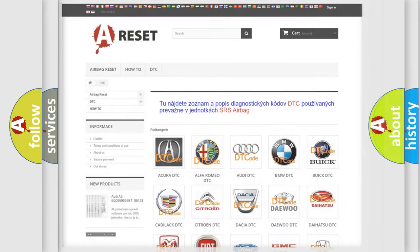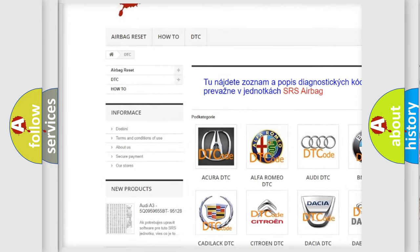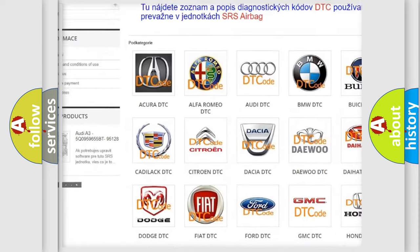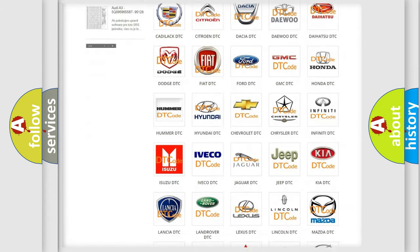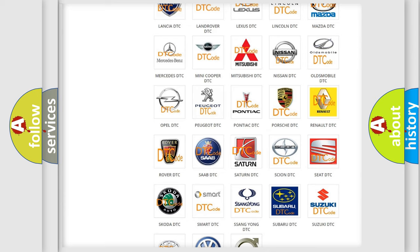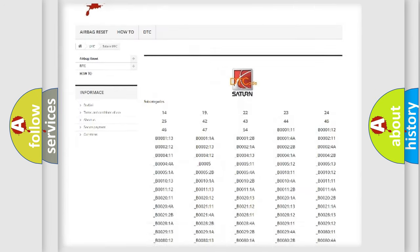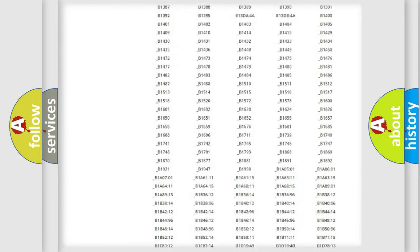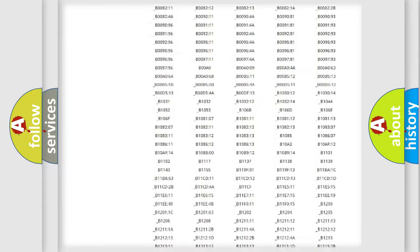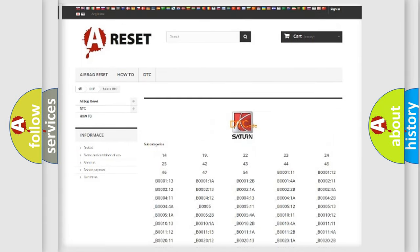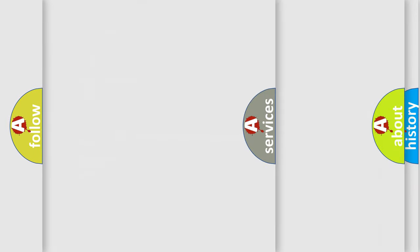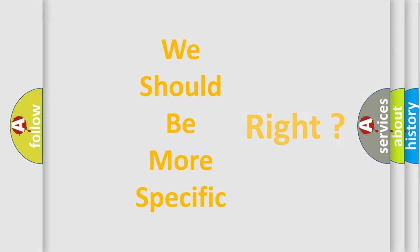Our website airbagreset.sk produces useful videos for you. You do not have to go through the OBD2 protocol anymore to know how to troubleshoot any car breakdown. You will find all the diagnostic codes that can be diagnosed in Saturn vehicles, and many other useful things. The following demonstration will help you look into the world of software for car control units.